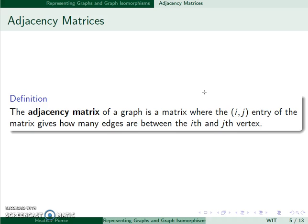We can also do an adjacency matrix. The i, j entry of the matrix gives how many edges are between the ith and jth vertex.